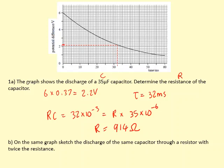On the same graph, sketch a discharge of the same capacitor through a resistor with twice the resistance. So if we increase the resistance by times 2, then the time constant is also going to increase by times 2. So the time it takes to go to 1 over E of the initial is going to double. So in this case it's going to go from 32 milliseconds to 64 milliseconds. So it's going to be just off the graph here. So we have the same starting voltage and an exponential curve going to that point there.